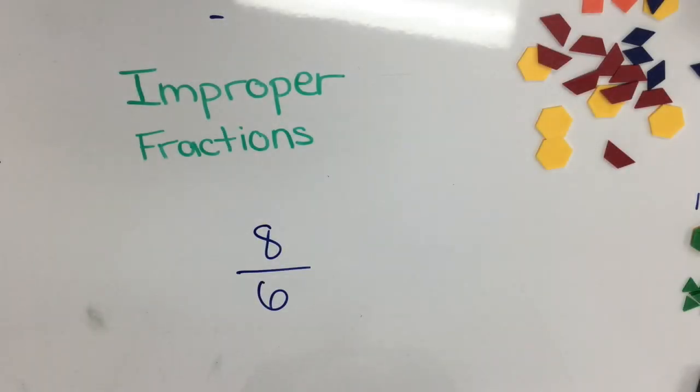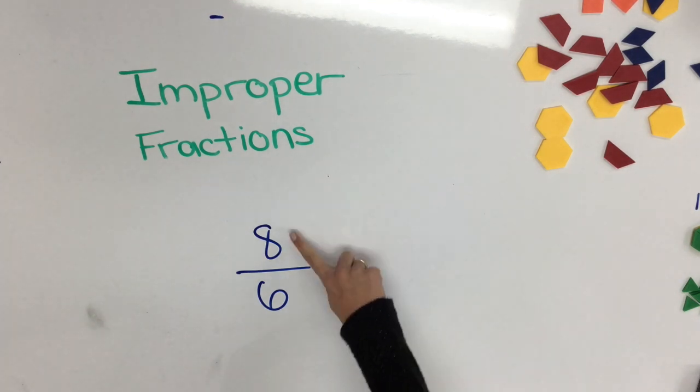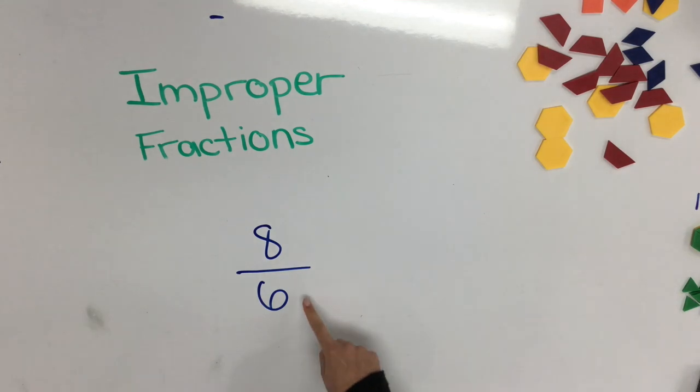Let's do one more example together. Have a think. How could you build or draw eight-sixths? Remember it's an improper fraction because our numerator is larger than our denominator. How could you build that?